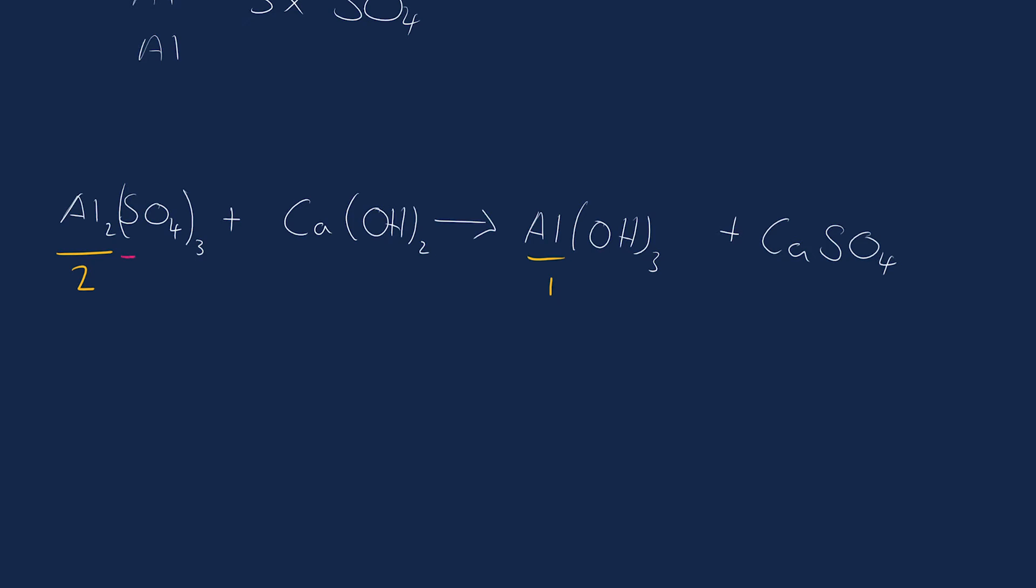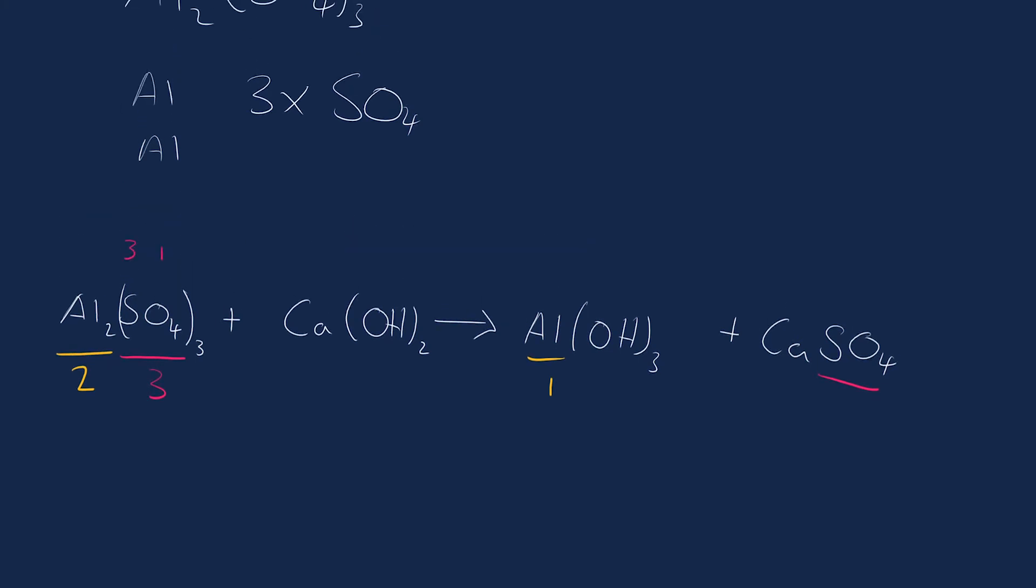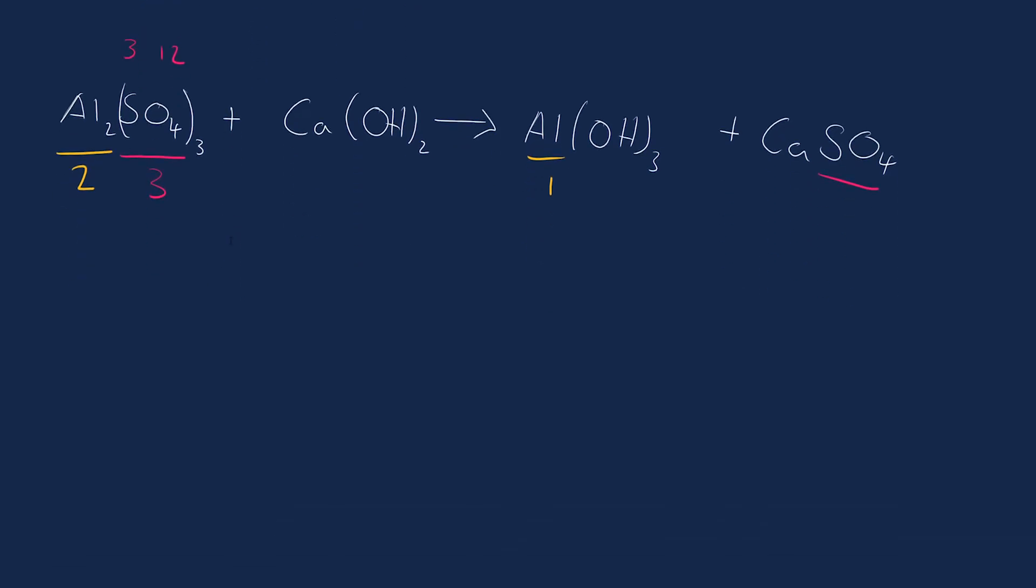You may have noticed we have an SO4 group here and on the other side we have an SO4 group. So rather than counting oxygens and sulfurs individually, we can group this as a sulfate group, because that doesn't change at the end of the reaction. So we have three sulfate groups. For calcium, we have one calcium. And just like with the sulfate group, we have a hydroxide group here and also a hydroxide here. We have two hydroxide groups and three hydroxide groups because of the little three there.